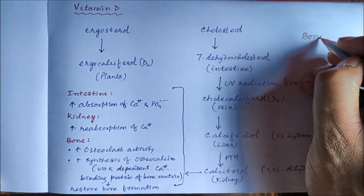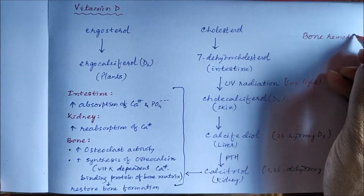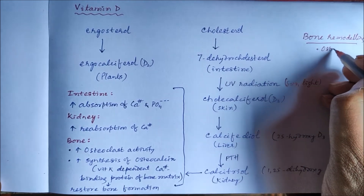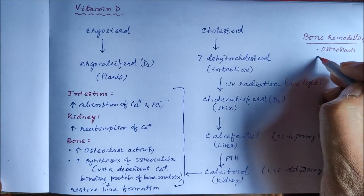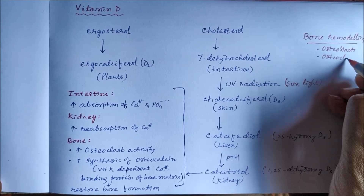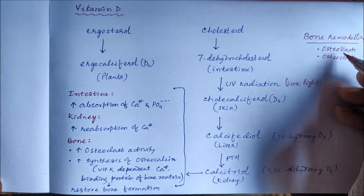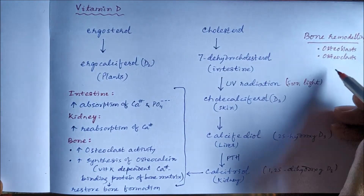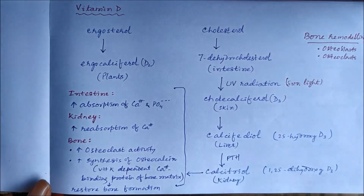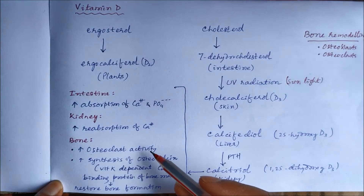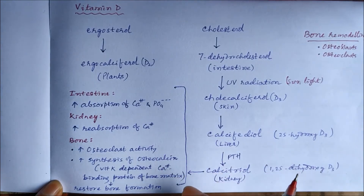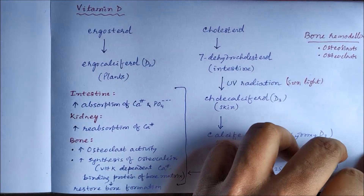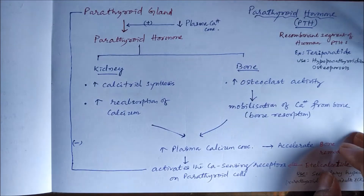When minerals and collagen are removed from the bone, calcium is released into the blood. This process is called bone remodeling, which continuously occurs in our bones due to the opposing actions of osteoblasts and osteoclasts. Calcitriol increases osteoclast activity and helps restore bone formation — that is why vitamin D is required for bone health.